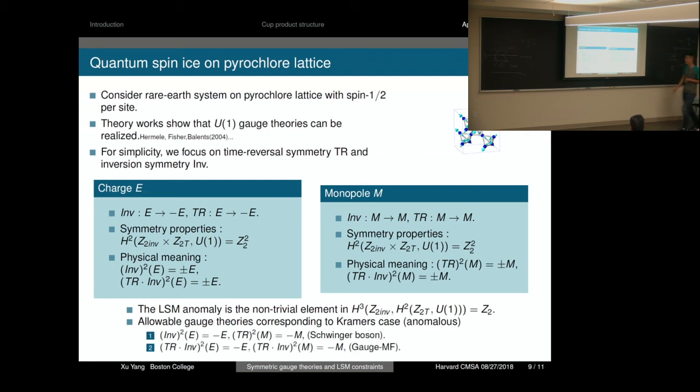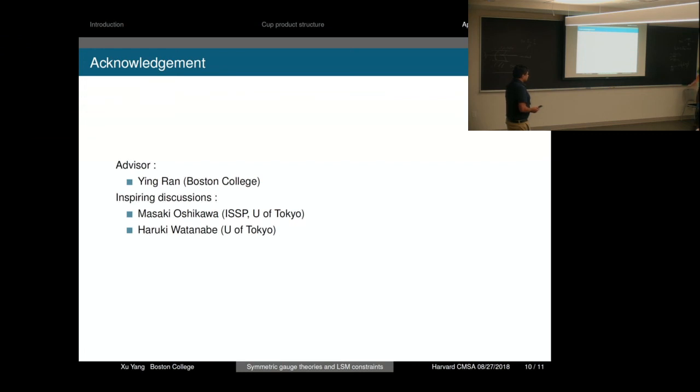The second one is time-reversal times inversion squared = -1 on both E and M particles. This is the gauge mean field theory realized in previous theoretical work. The point of this discussion is that from algebraic calculation, we know these two states are different, and we know the adjacent ordered states from symmetry analysis. That's very helpful in our search of such states. With that, I would like to say thank you.